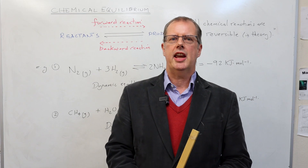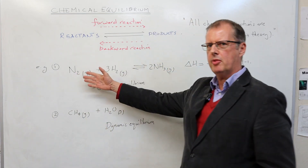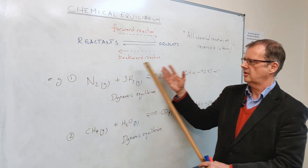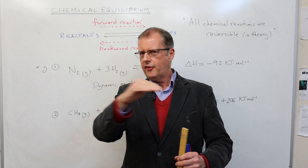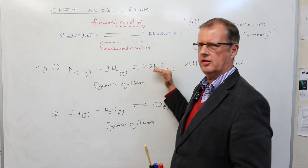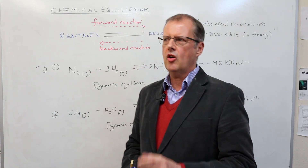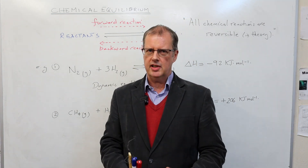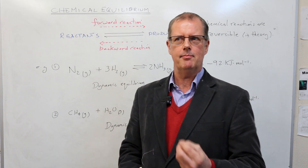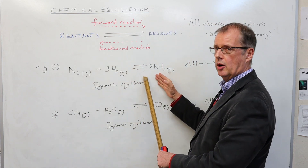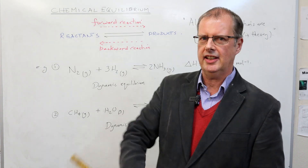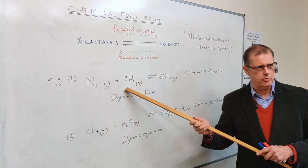A system in dynamic equilibrium will reach a resting point where the forward and backward reactions are happening simultaneously and there is no net change in the concentration of reactants. To achieve that we need constant temperature, pressure, and a closed environment where materials can't enter or leave. When those factors are in place, we achieve dynamic equilibrium — a bit like the person walking up the down escalator.